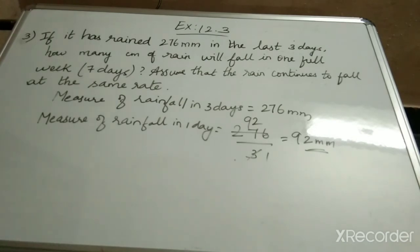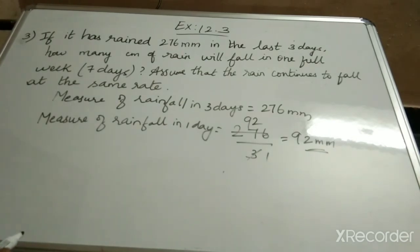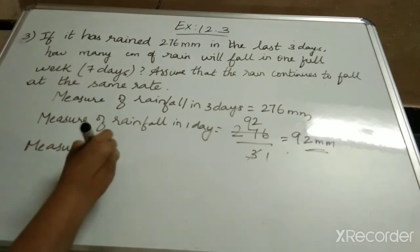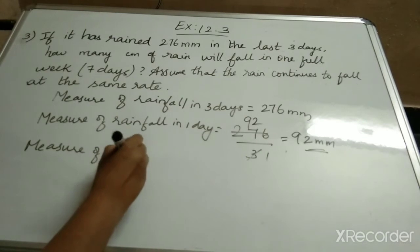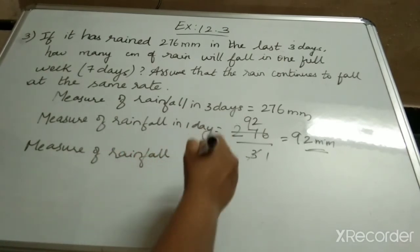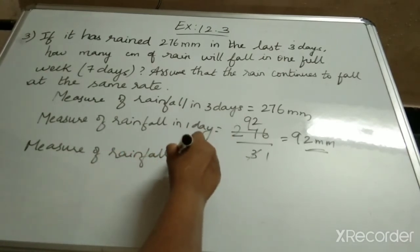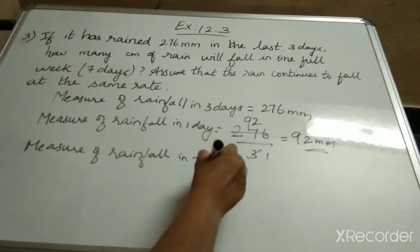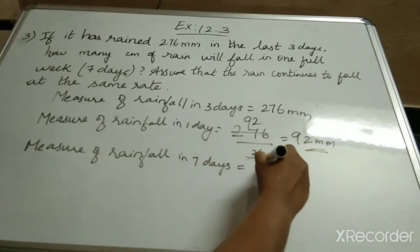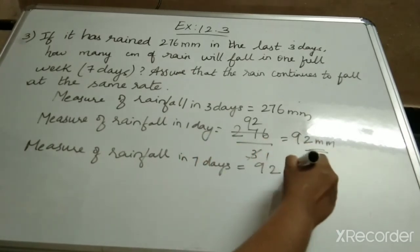This is the measure of rainfall for 1 day. Now we have to find the measure of rainfall for 7 days — the measure of rainfall in 1 full week, that is in 7 days. Now I have to multiply 92 and 7.